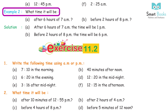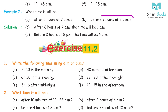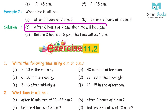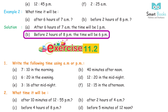Example 2: What time will it be? A. After 6 hours of 7 AM — the time will be 1 PM. B. Before 2 hours of 8 PM — the time will be 6 PM.